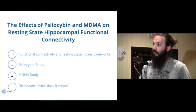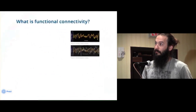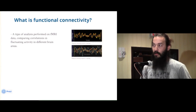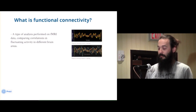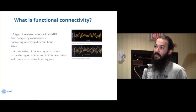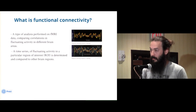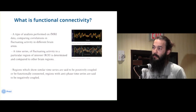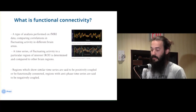Functional connectivity is a type of analysis performed using fMRI comparing correlations in fluctuating activity in different brain regions. This is done by measuring a time series of fluctuating activity in a particular region of interest over time and comparing it to other brain regions. Regions which show similar time courses of activity are said to be positively coupled or functionally connected, whereas regions with antiphase time series are said to be negatively coupled.